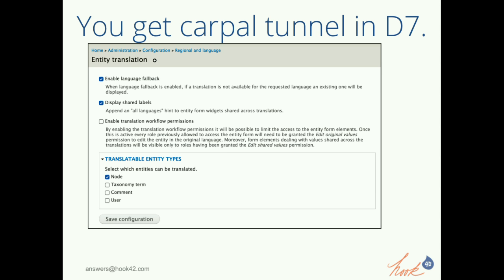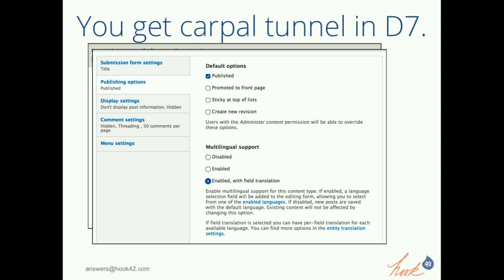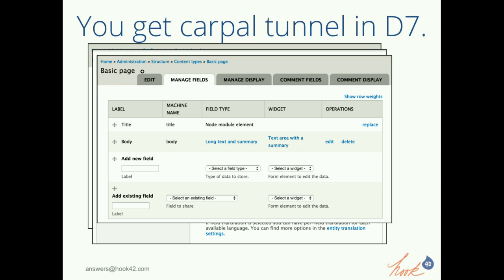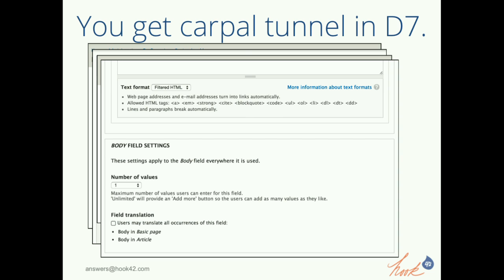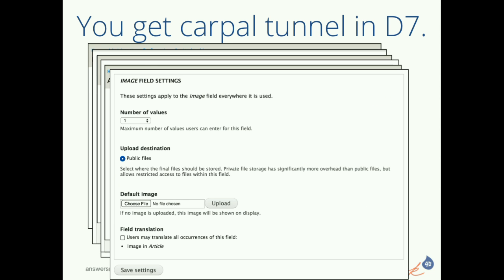You get carpal tunnel in Drupal 7 because you're going to be clicking a lot. Here's an example: you go to the entity translation configuration page and enable node translation. Then you go to a particular content type, enable it with field translation, and save. Then you need to go to every single field you want to translate. If you install the title module, you have to click 'replace' to make the title translatable. For every single field in your content type, you need to enable field translation. If you have a lot of content types and a lot of fields, this is a pretty tedious process — repeat, repeat, repeat.